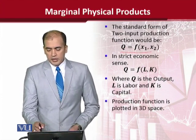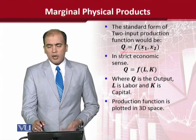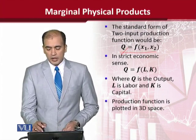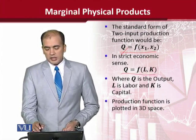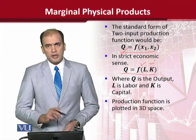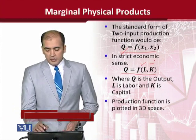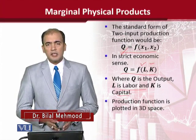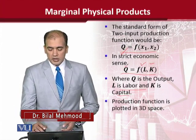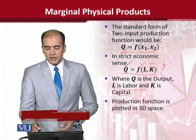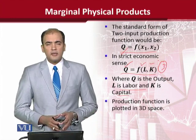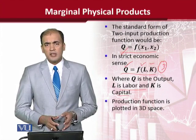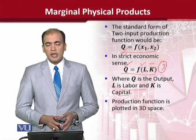A production function is based upon perhaps two inputs — in this case we have assumed two inputs, though there can be more. In a more strict sense we can say labor and capital that will allow us to have a production function. It has three variables: output, labor, and capital. For this we have to resort not to a 2D graph but rather a 3D graph — a three dimensional graph.